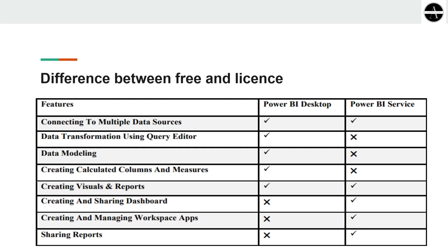Let's look at the different versions and licensing available in Power BI. There are different versions — we have a free account and a paid account. Power BI Desktop is free, meaning you don't have to pay anything for it, while Power BI Service is a paid license. There are different features available in Power BI, so let's see the differences between them.